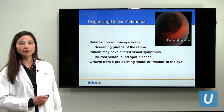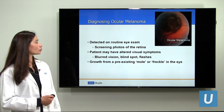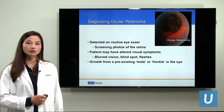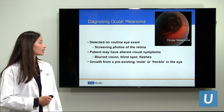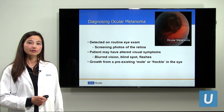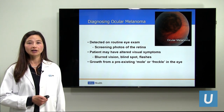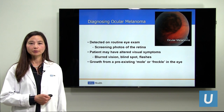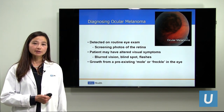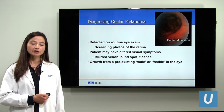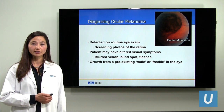How is ocular melanoma diagnosed? There are a few ways. Sometimes on routine eye examination the tumor may be discovered. It is common to have screening photographs taken of the retina when a person goes to their eye care provider. If there is a pigmented spot or other abnormality of the retina, this may be detected by photographs, and we tend to see many patients referred for small pigmented spots to make sure there is no ocular cancer.